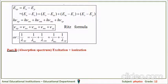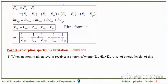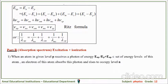Part B — Absorption spectrum, excitation, and ionization: when an atom in level p receives a photon of energy E_np belonging to the set of energy levels of this atom, an electron absorbs this photon and rises to occupy level n. The photon energy plus E_p equals E_n. The atom absorbs the photon and transitions to the higher level n.